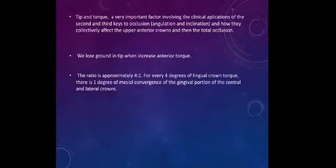Tip and torque: very important factors involving the clinical application of the second and third key to occlusion, and how they collectively affect the upper anterior crowns and the total occlusion. We lose ground in tip when we increase anterior torque. The ratio is approximately four to one. That means for every four degrees of lingual crown torque, there is one degree of mesial conversion of the gingival portion of the center and lateral crowns.